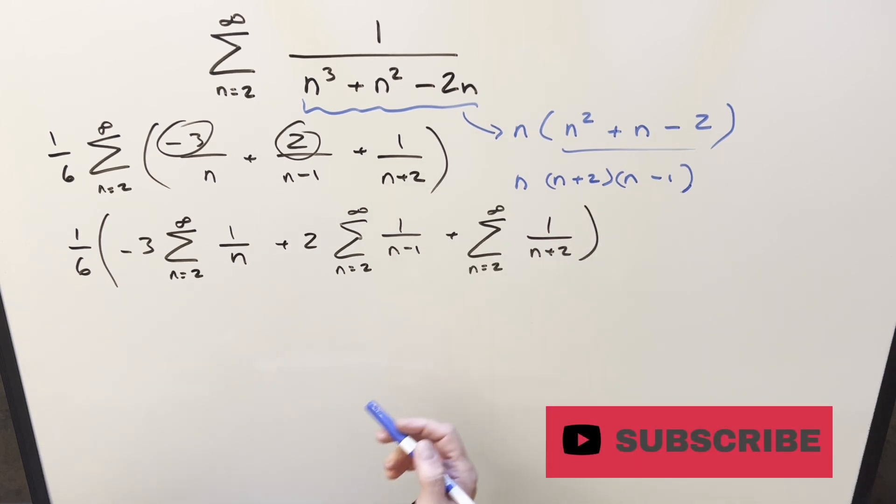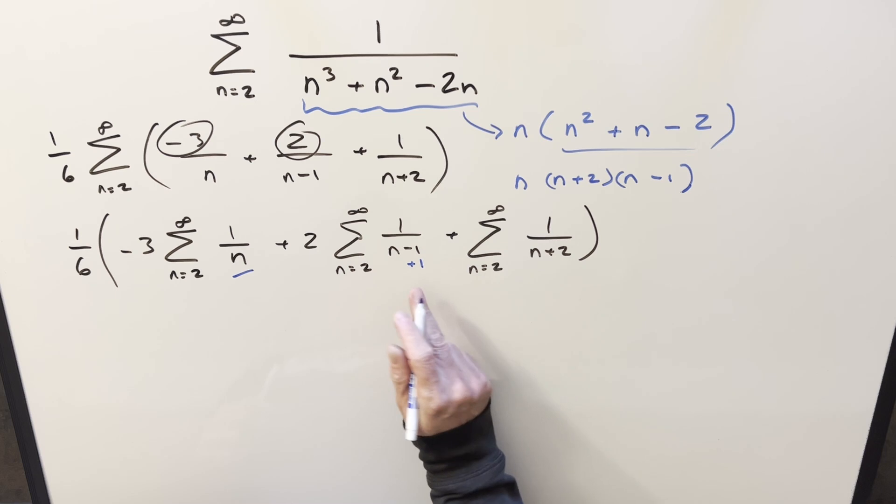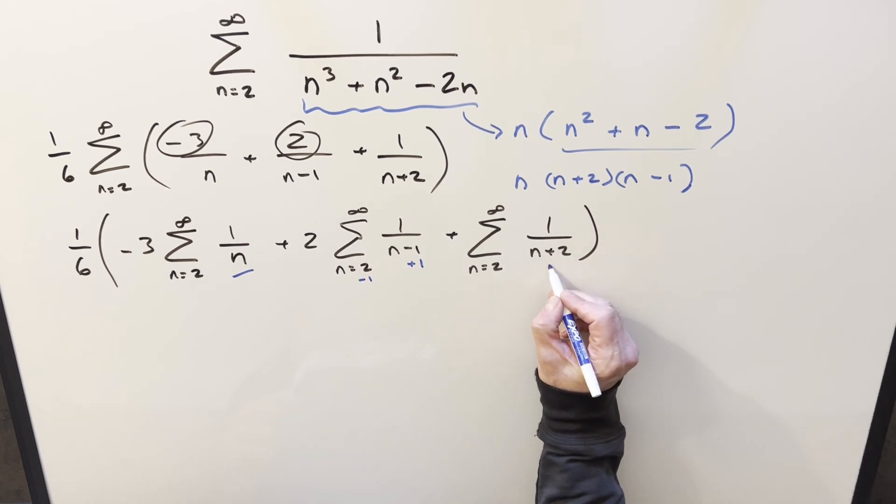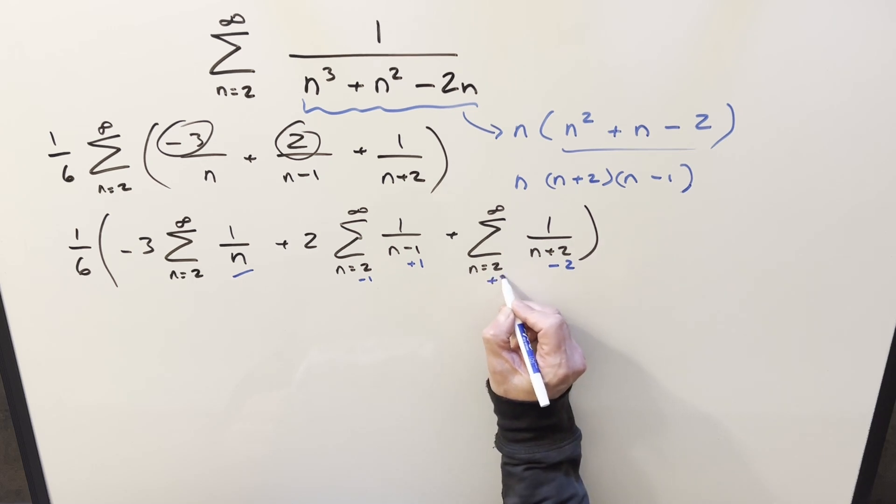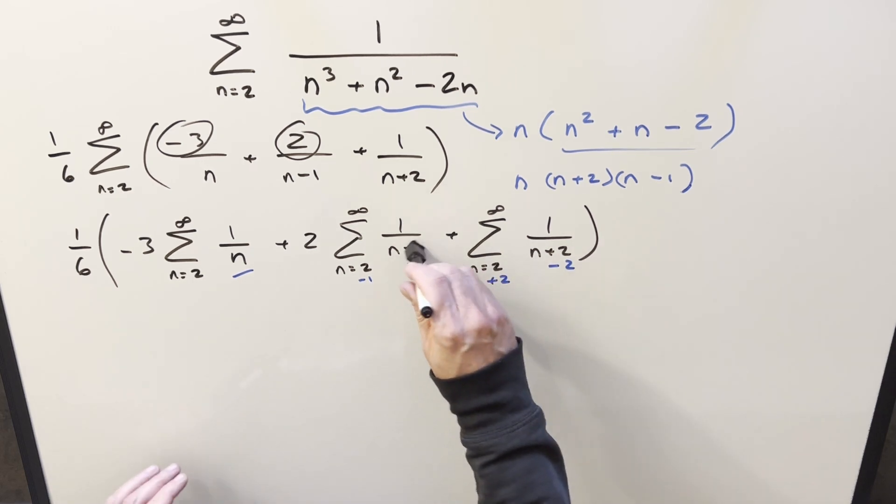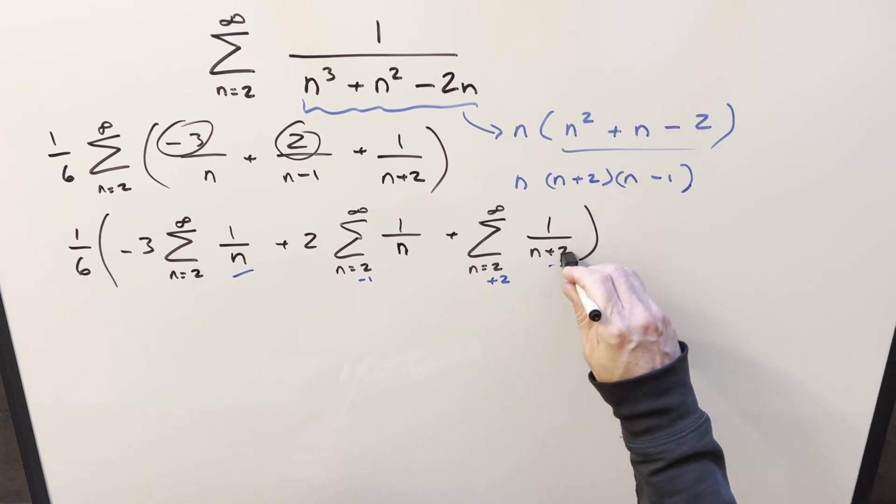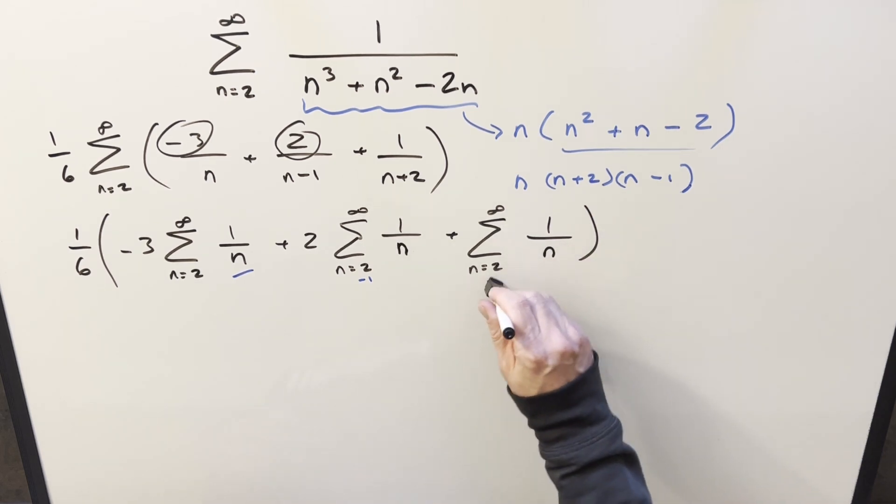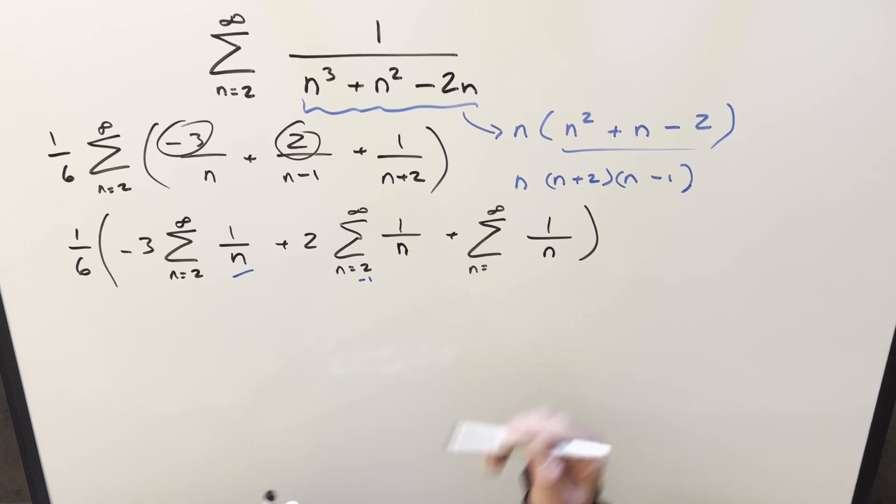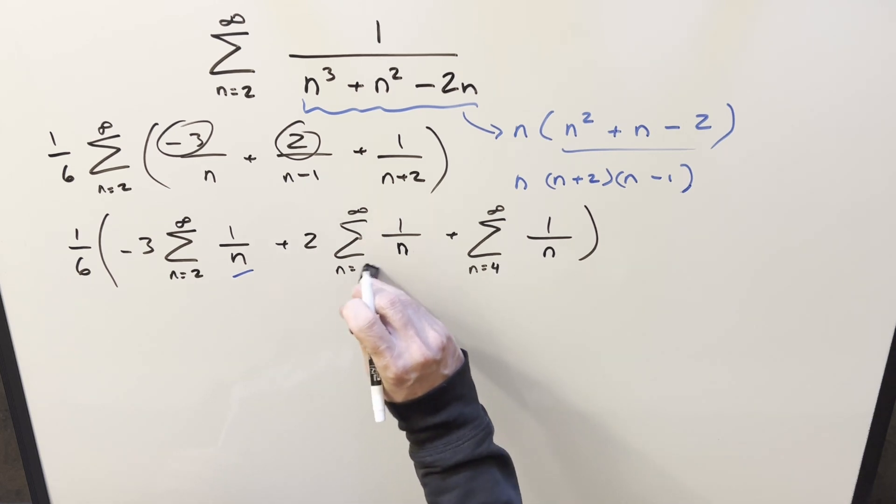And then in order to avoid writing out terms, what I'd like to do is get all these in the same form. They're all kind of the same with the 1 over n, they're just kind of shifted. So let's get everything to look like 1 over n. To do that, I can do an index change. If I add one, I just need to subtract one here. Same thing here. If I subtract 2, I just need to add 2. So this is going to become just 1 over n. But now here we have 2 plus 2, n is going to be 4. And over here, it's just going to be a 1.